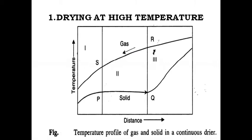This figure shows the temperature profile of gas and solid in a continuous dryer. This graph plots distance on the x-axis and temperature on the y-axis. For analysis, let us divide the dryer into three zones. Zone one is a preheating zone where the solid is heated, and very little drying takes place.